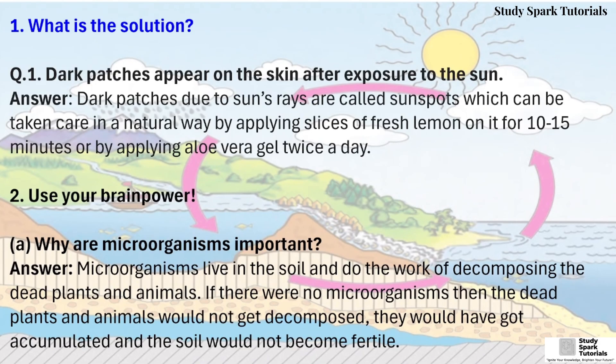First, find the solution. Question number 1: Dark patches appear on the skin after exposure to the sun. Answer: Dark patches due to the sun's rays are called sunspots, which can be taken care of in a natural way by applying slices of fresh lemon on them for 10–15 minutes, or by applying aloe vera gel twice a day.